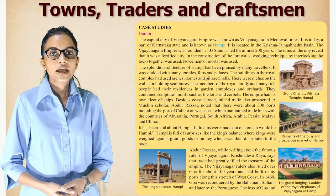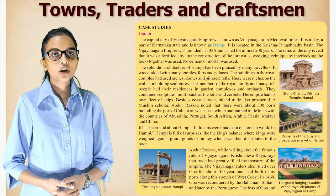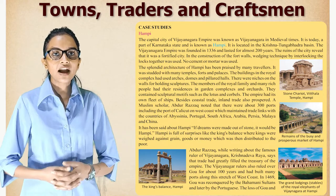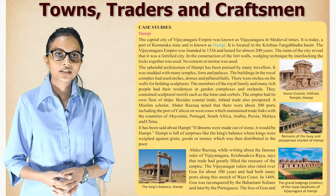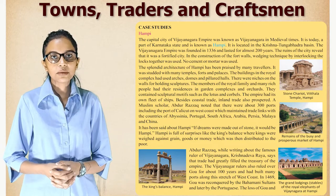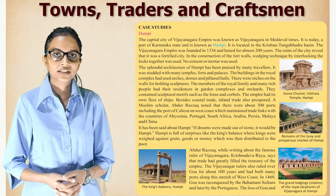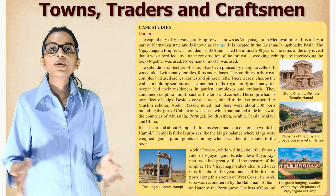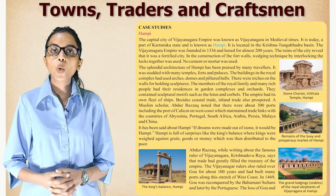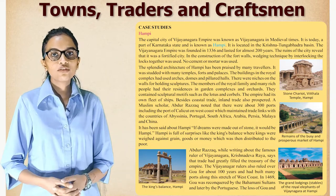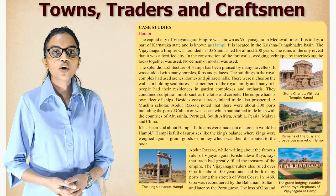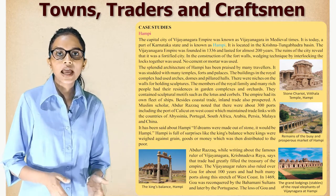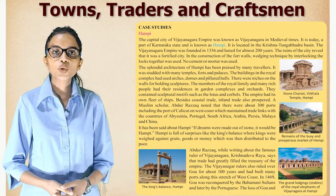In the construction of the fort walls, a wedging technique by interlocking the rocks together was used — no cement or mortar was used. The splendid architecture of Hampi has been praised by many travelers. It was studded with many temples, forts, and palaces. The buildings in the royal complex used arches, domes, and pillared halls, with niches on the walls for holding sculptures. Members of the royal family and many rich people had their residences in garden complexes and orchards, containing sculptural motifs such as the lotus and corbels.